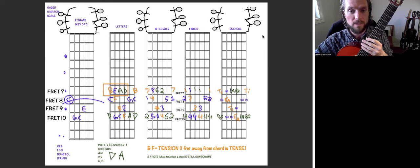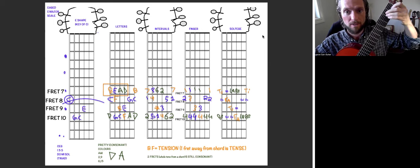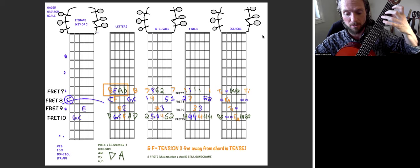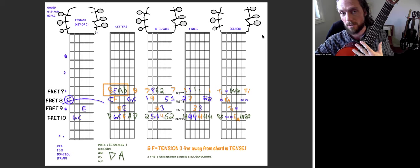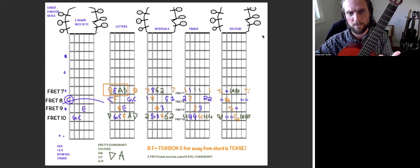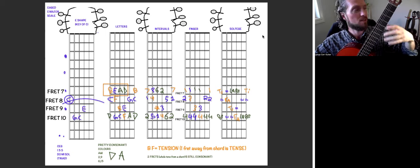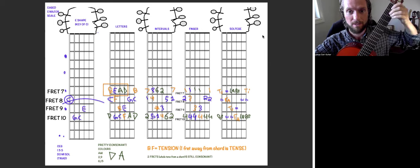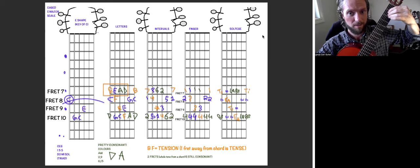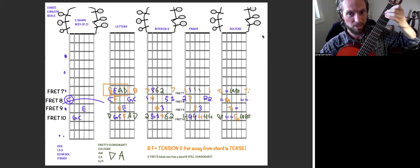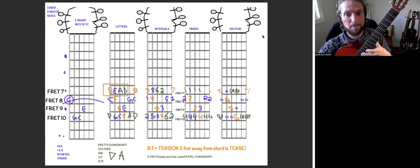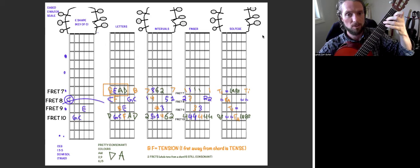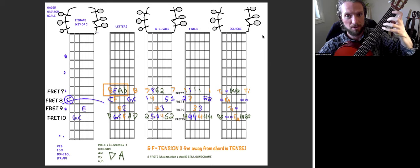Alright, so I'm going to show you the E shape of the C major scale. The CAGED system - the whole idea is that there's five chord shapes that can cover the whole neck of the guitar for all the scales and arpeggios and understanding where everything goes, which is really helpful. I've already done the C shape in the first position covering the first four frets.